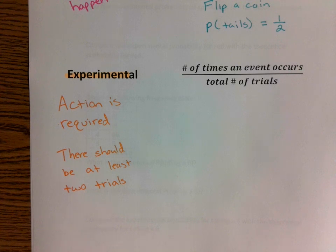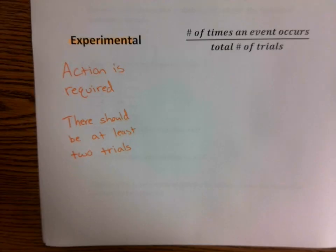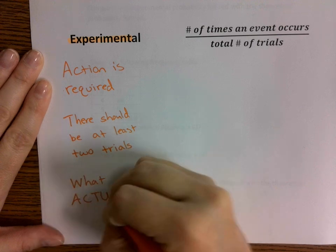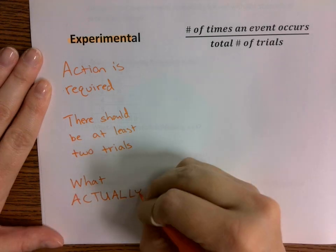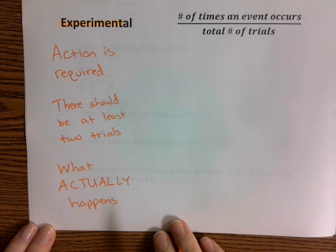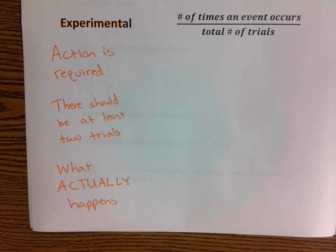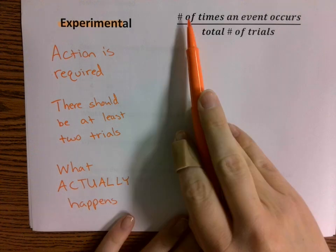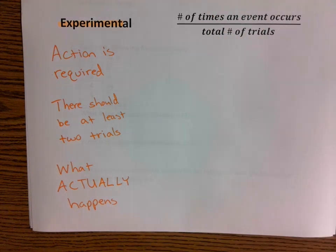Just like with theoretical we call it the probability of what should happen, with experimental probability we call it the probability of what actually happens — because action is actually happening. You must perform some form of an experiment, you must have at least two trials, there has to be something physical going on, and then you're recording the results of what actually happens. It's the number of times that your event occurred out of the total number of trials — it doesn't have to do with how many possible outcomes the experiment has, but how many times you performed your experiment.